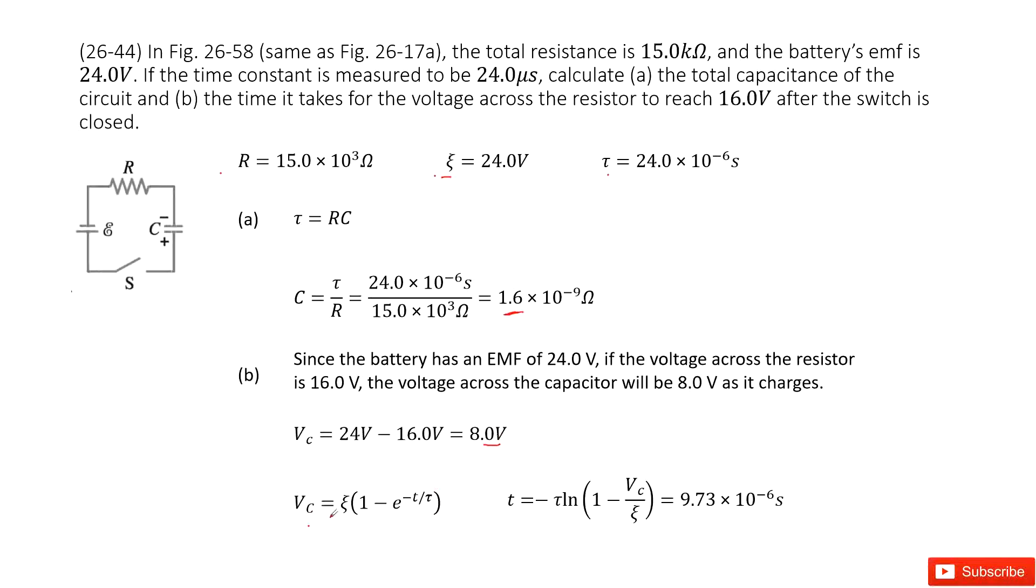Then we can see in this function, Vc is given, epsilon is given, and tau is given. We can solve this equation to get this function for T. The final answer is there.